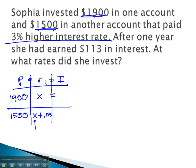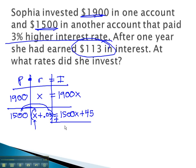Again, we multiply principal times rate to calculate interest. $1,900x is the amount of interest earned in the first account, and when we distribute in the second, we get $1,500x plus 45. The only other piece of information we need is the third, $113 in total interest. That's the total interest when the two interest accounts are added together.